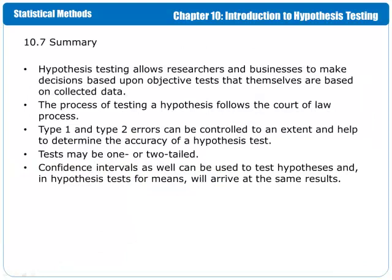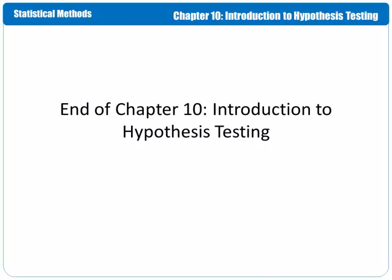So in summary, hypothesis testing allows researchers and businesses to make decisions based upon objective tests that are based on collected data. The process of testing a hypothesis follows the court of law process. Type 1 and type 2 errors can be controlled to an extent and help to determine the accuracy of a hypothesis test — we're looking at setting sensitivity and specificity values so that we can control our rate of false positives and false negatives. The test may be one-tailed or two-tailed. Confidence intervals can also be used to test hypotheses, and in hypothesis tests for means they will arrive at the same results. And that is the end of Chapter 10, Introduction to Hypothesis Testing.